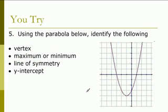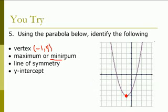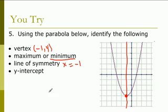Using the parabola below, identify the vertex, maximum or minimum, line of symmetry, and y-intercept. The vertex is here — it's the lowest point — and the vertex is (-1, 4). Because it's the lowest point, it is the minimum. Drawing the line of symmetry, the equation is x equals negative 1. And the y-intercept touches the y-axis here at negative 3, so the y-intercept is (0, negative 3).